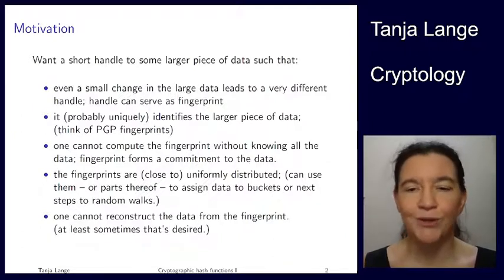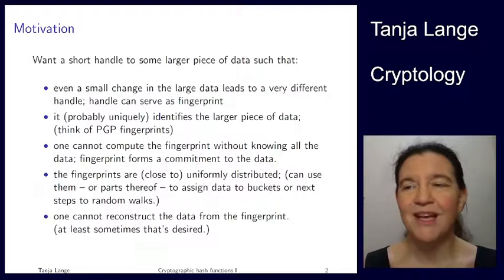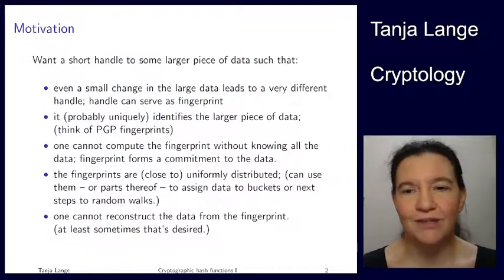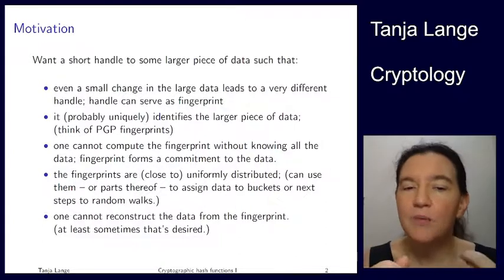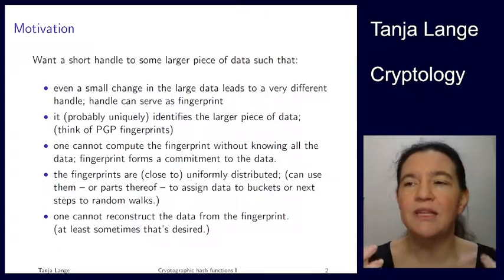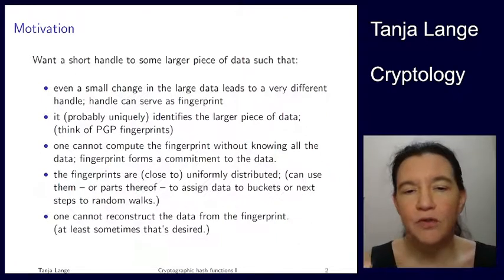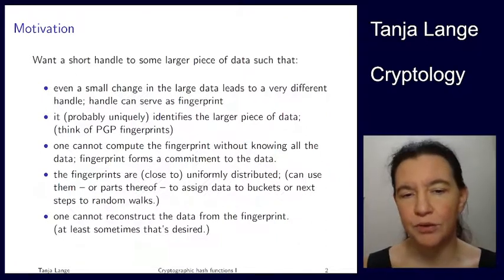We have only 32 pre-computed values. 32 is a rather small number, so of course you will have overlaps. But in that case, you make use of the uniformity of the distribution.